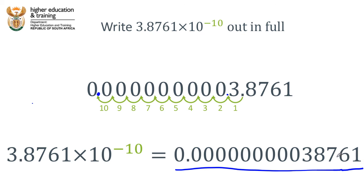And that is how to use scientific notation to write or rewrite very small but very long numbers in ways that are slightly easier to read and write.